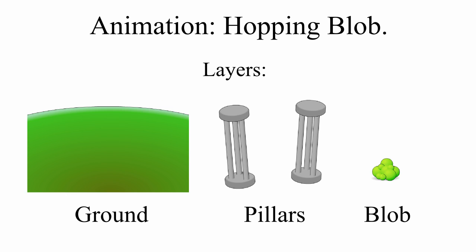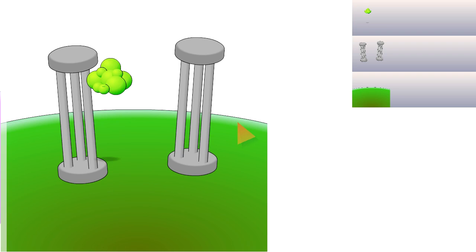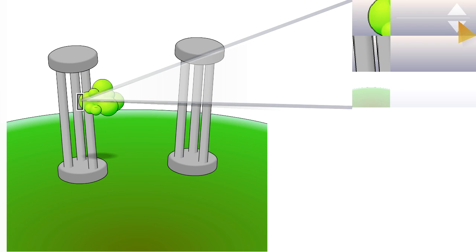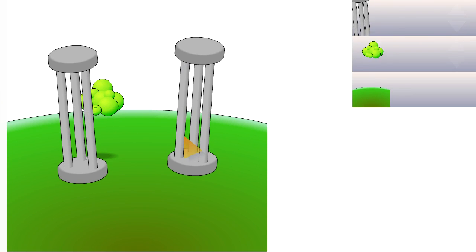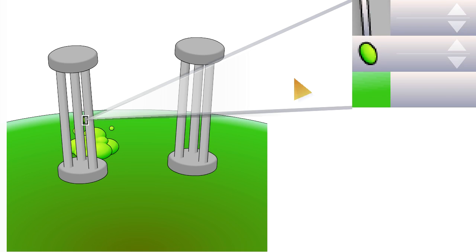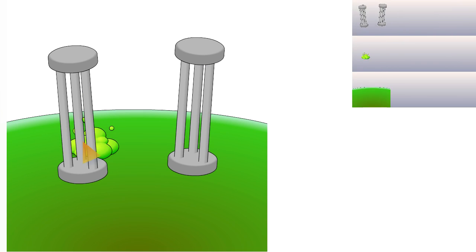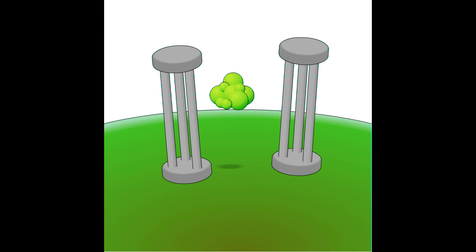Our method extends to editing spatio-temporally local regions and animations. The user rolls the animation forward and fixes the blob to pass behind the pillar. The final animation after adjusting the rest of the blob's path.